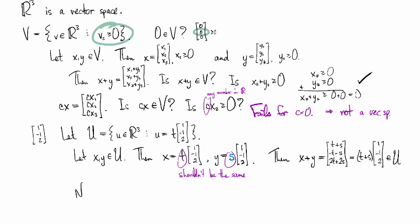Now we just need to check scalar multiplication. So c times x is going to be ct times [1,-1,2]. And I can just say, look, this is definitely a scalar multiple of [1,-1,2], where the scalar multiple is c times t. So that's clearly in u. So we're good to go. So u is a vector space. And in fact, it's a subspace of r3.